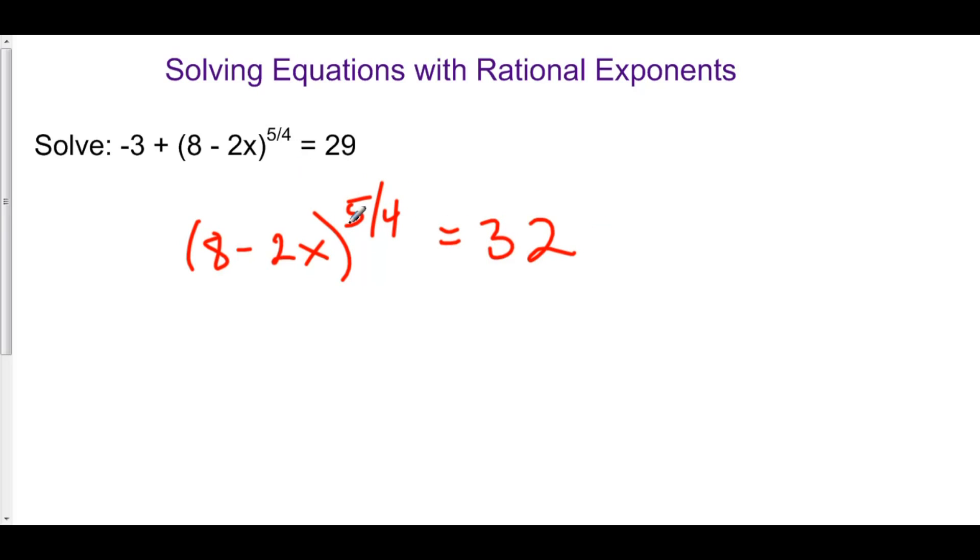Now, we want to get rid of this exponent of 5 over 4. In other words, we want to make it 1. But how can we make 5 over 4 equal to 1?